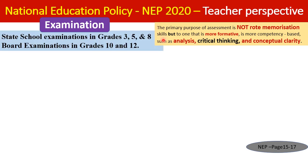In 15 years of schooling, there will be only five examinations. State-level school examinations will be at Grades 3, 5, and 8. Board-level — all-India level — examinations will be at Grades 10 and 12. There will be one unified board along the length and breadth of the country.